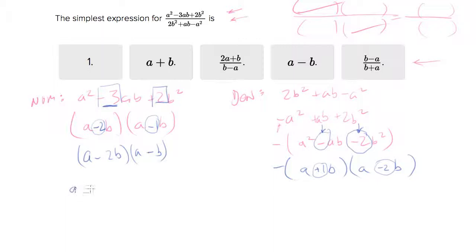So what you end up with is a minus two b times a minus b over negative a plus b times a minus two b. And what you can see is what we expected to happen happened.